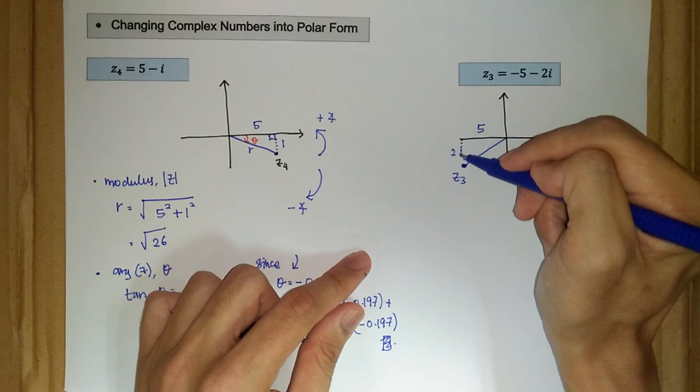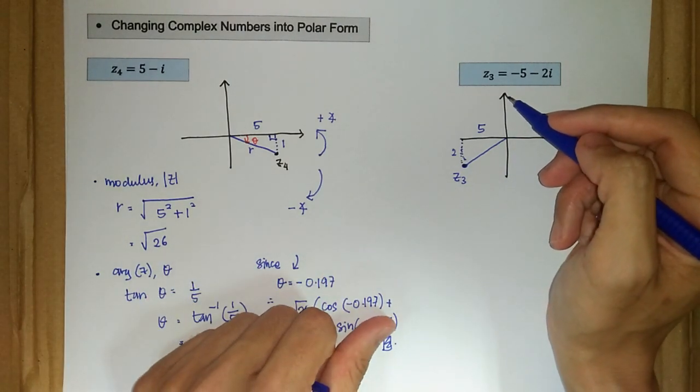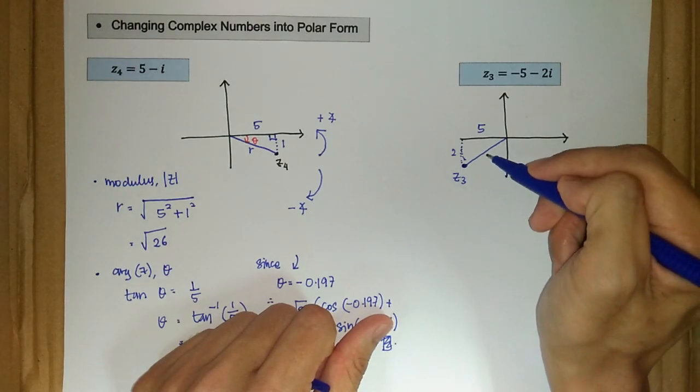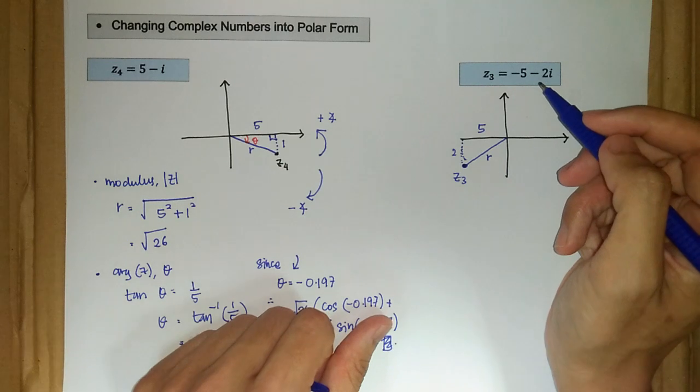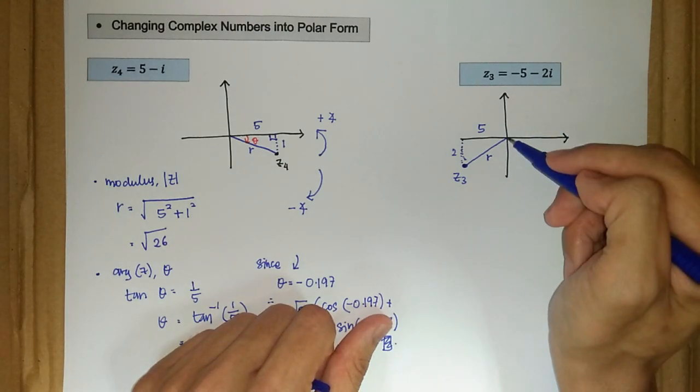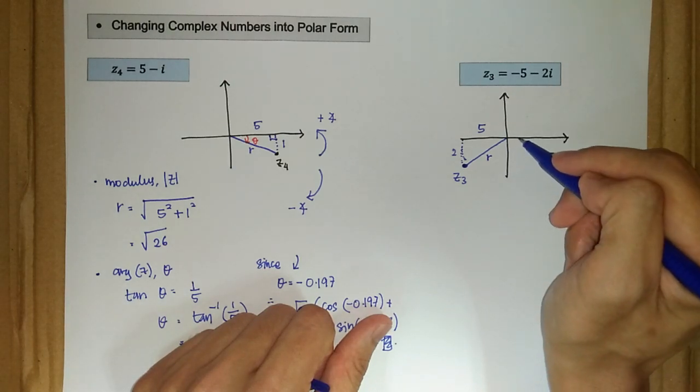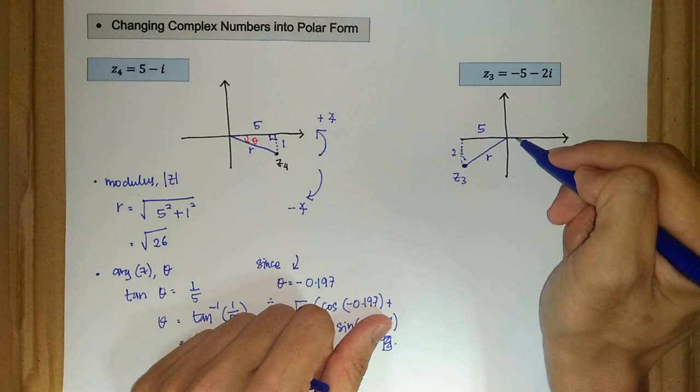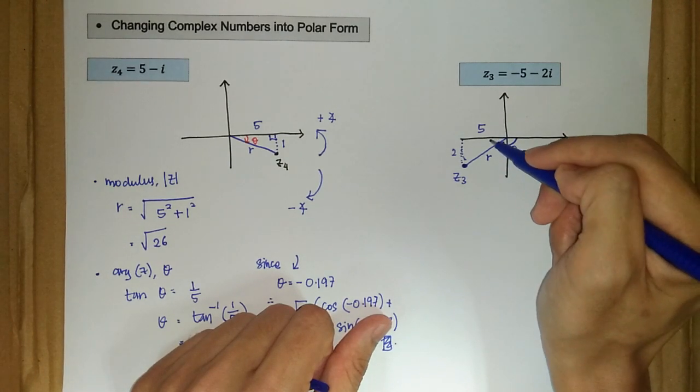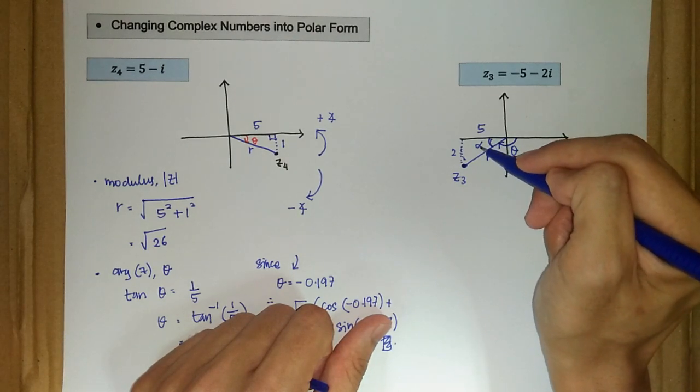So now let's decide our modulus and our theta, our argument here. So basically this is our r or modulus. What about our theta or argument? Our argument is still calculated or measured from the positive real axis. Therefore this should be our theta.